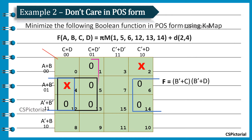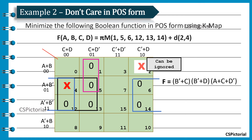And finally, we make this pair bigger because there is no possibility of making any other larger group, thereby getting the resultant term A plus C plus D bar. Make a note: the don't care cells can even be ignored if they don't help us in making any larger group. They need not be mentioned in the final expression.